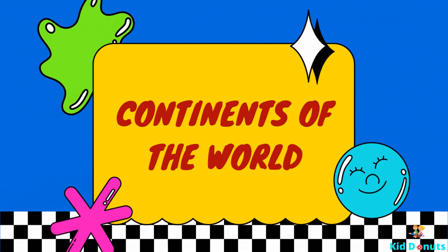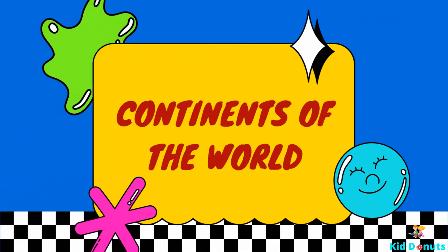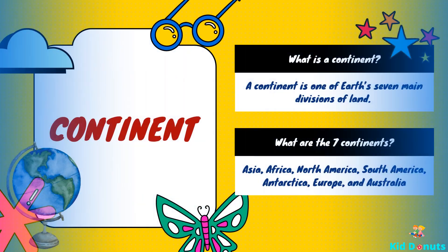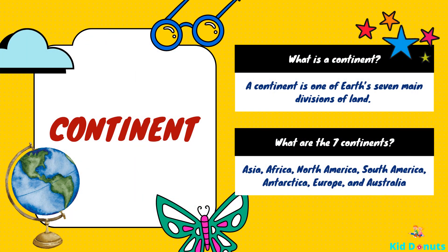Continents of the World. What is a continent? The Earth consists of 71% water and 29% landmasses. These landmasses are further divided into continents. A continent is one of Earth's seven main divisions of land.